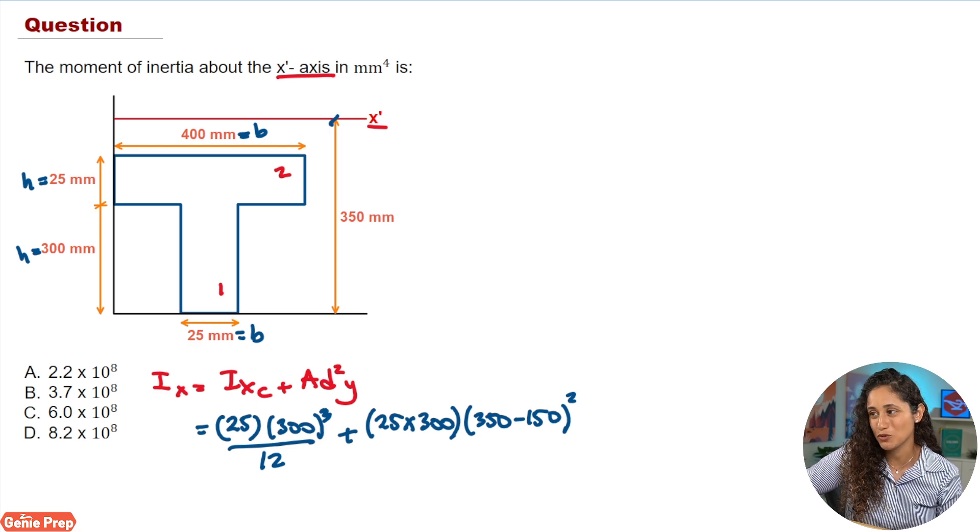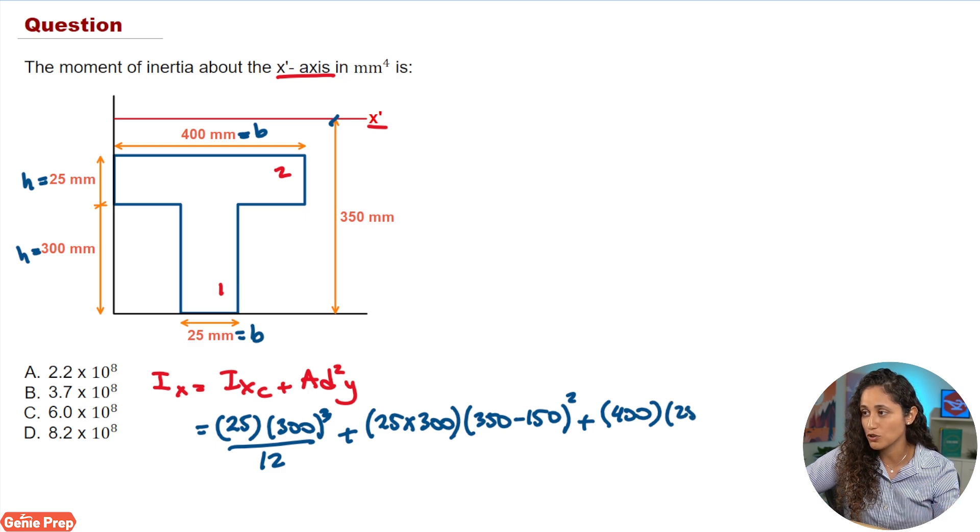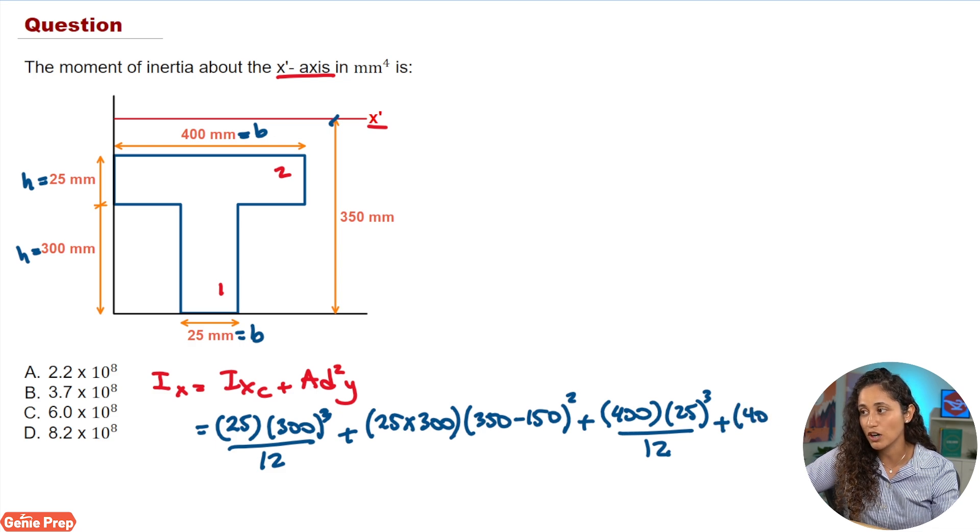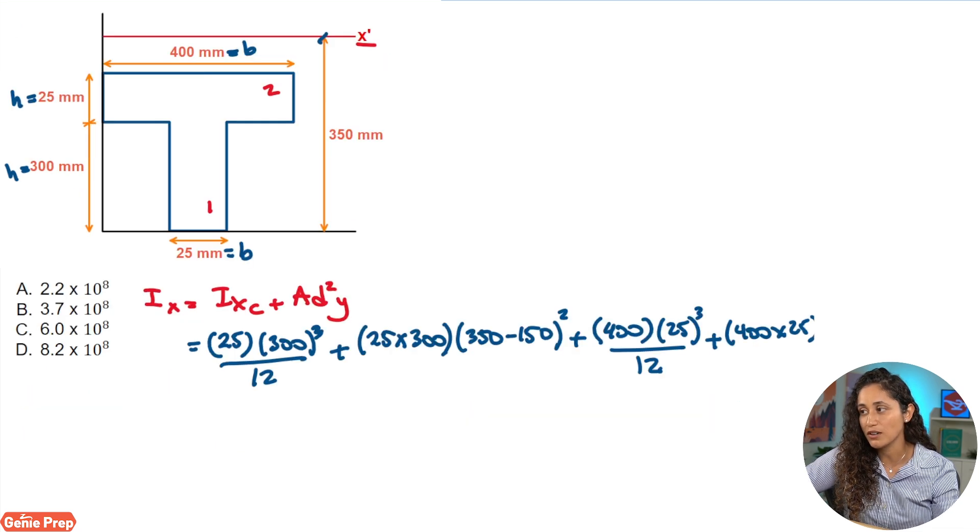Now let's go ahead and add shape two. So we're going to do plus IXC for shape two is going to be the same as shape one, which is BH cubed over 12. So here we're going to do 400. Now 25 is going to be cubed, and then we're going to divide this term by 12. Then we're going to do plus the area, which is 400 times 25, and then DY.